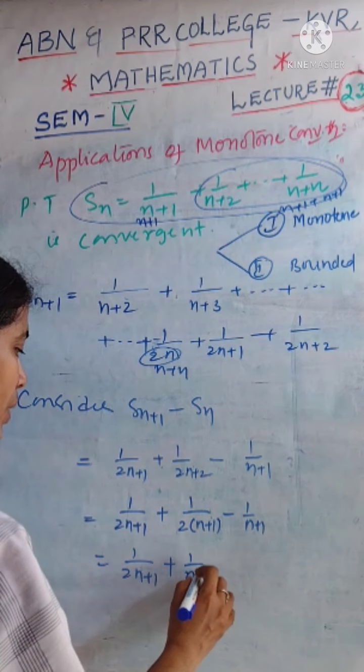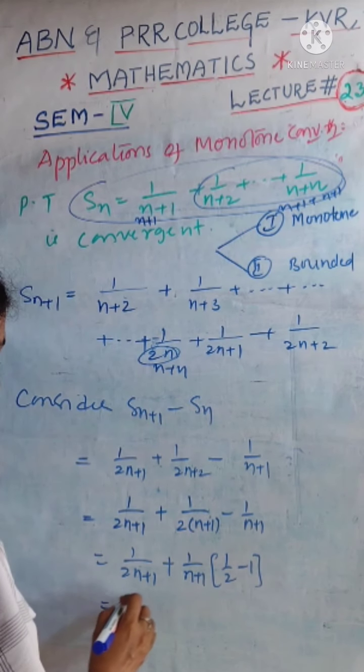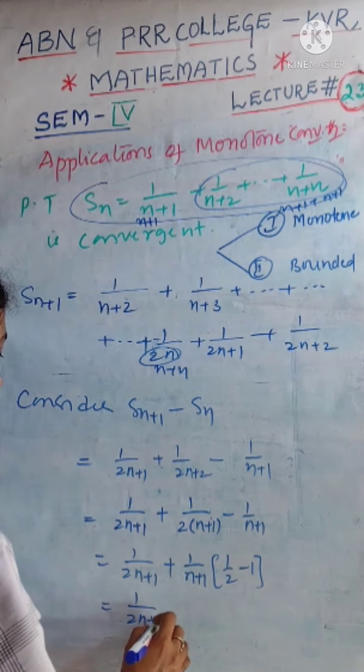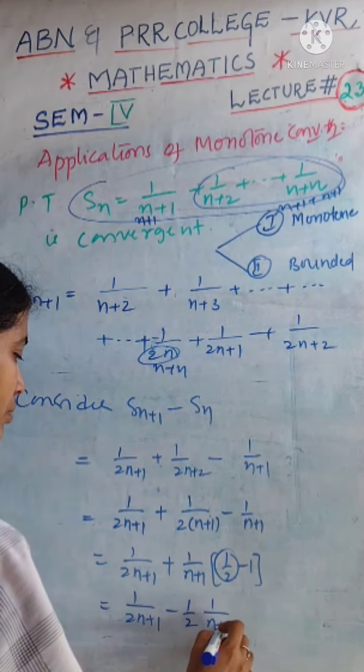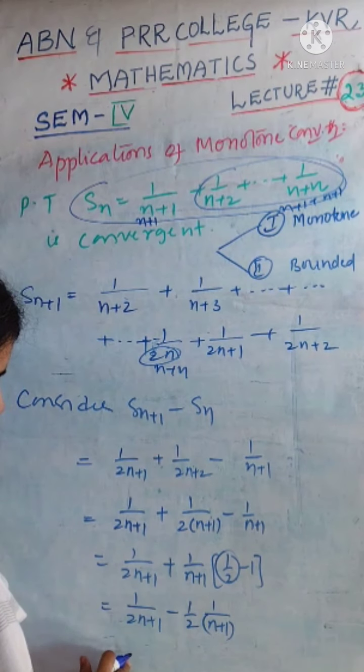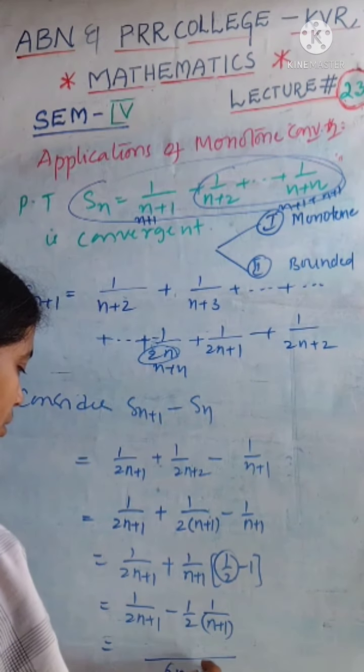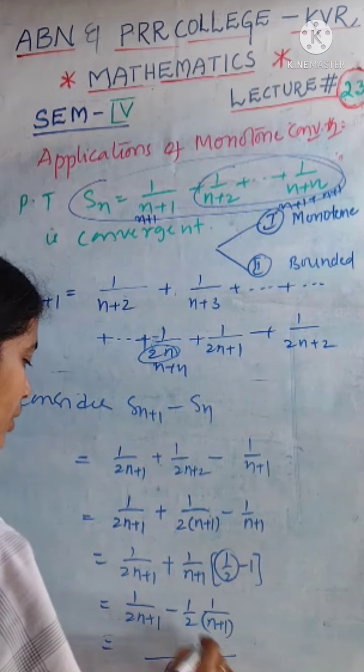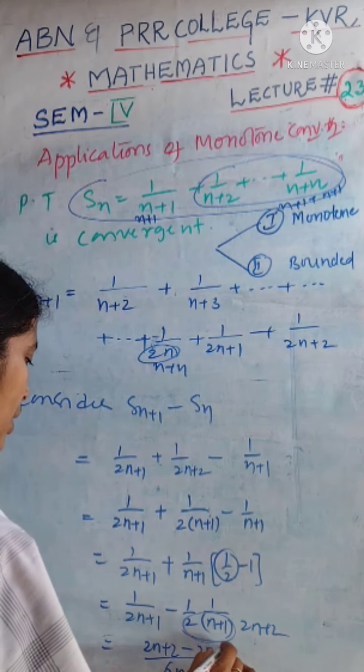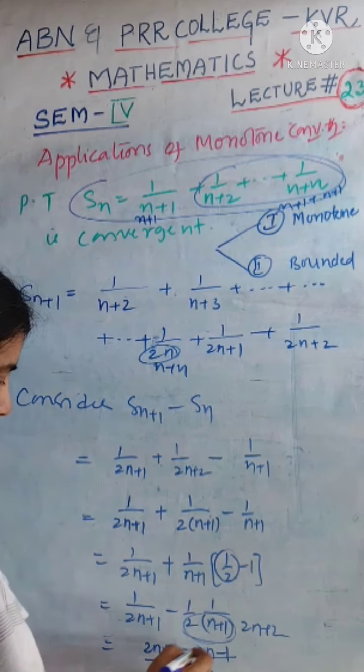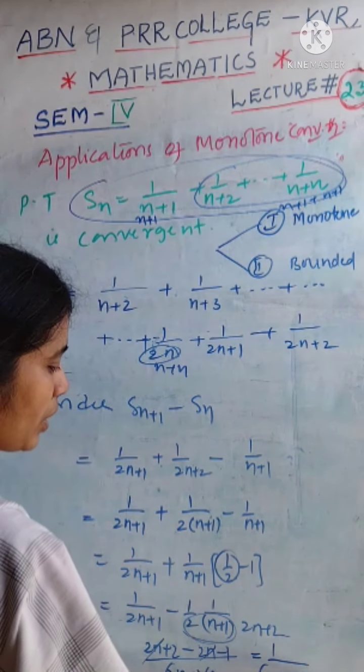1 by n plus 1, this is minus 1, which is equal to 1 by 2n plus 1, half minus 1, which is minus half. Combining the terms, I am showing 2n plus 2. 2n plus 2 minus 2n minus 1 minus half, 2n gets cancelled. This value is 1 by 2n plus 1 into 2n plus 2.